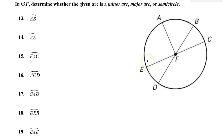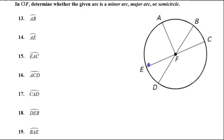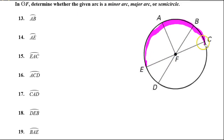Determine whether the given arc is a minor arc, major arc, or a semicircle. A semicircle is an arc that is 180 degrees — semi means half, so a semicircle is half a circle. Anything larger than a semicircle is going to be a major arc. Anything smaller than a semicircle is going to be a minor arc.